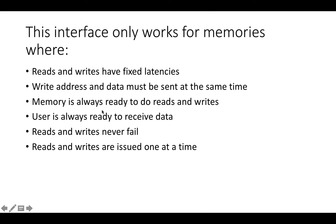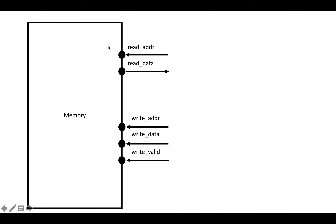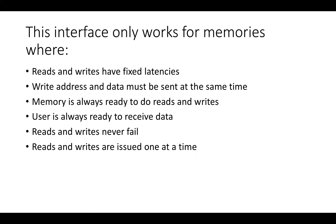Two more limitations: the memory is always ready to do reads and writes, and the user is always ready to receive data. There's no signal coming out of the memory to say it's not ready, so it's assumed the memory can always service reads and writes. On the memory's side, when read data is sent out, it's assumed the user is always ready to receive it — the memory has no way to know whether the user is or isn't ready to receive the requested data.